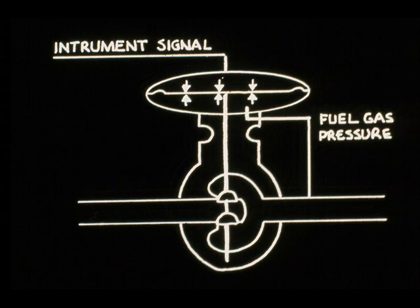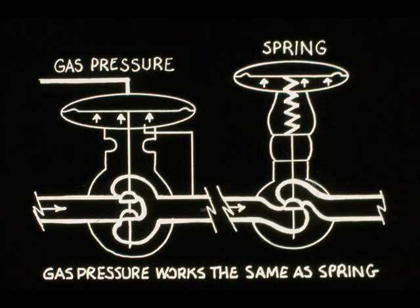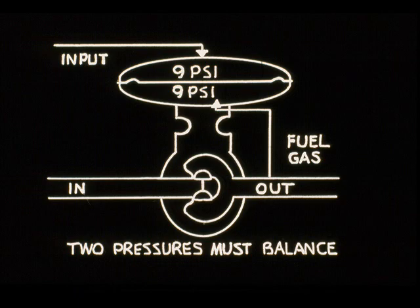The balance valve is used on low pressure gas applications. In this specific example, the downstream pressure of the fuel gas opposes the instrument signal. The instrument that signals the valve does not establish a direct valve position — it establishes an equal downstream pressure. Any downstream pressure variation that occurs will be sensed by the diaphragm, and the actuator will automatically reposition the valve to maintain the set downstream gas pressure.